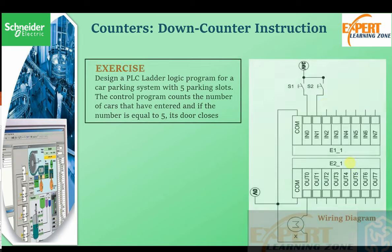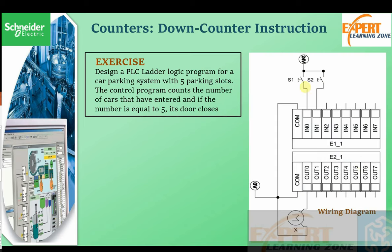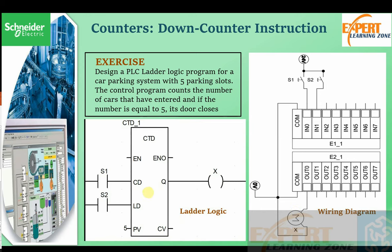Let's look at the solution. In the hardware circuit, we have two sensors or switches: S1 is used to decrement the count, and S2 is used to transfer the preset counter value to the current counter value. X is our output. The logic looks simple — when S1 triggers, it decrements the current counter value.